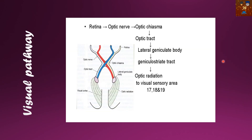Next comes the visual pathway — another easy picture to draw, with a flow chart also provided. From the retina, the light impulse enters the optic nerve, then travels to the optic chiasma, then to the optic tract, then to the lateral geniculate body — an oval-shaped structure — then via the geniculate tract and optic radiation to the visual sensory areas: areas 17, 18, and 19 of the visual cortex.